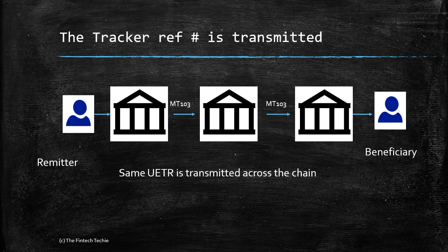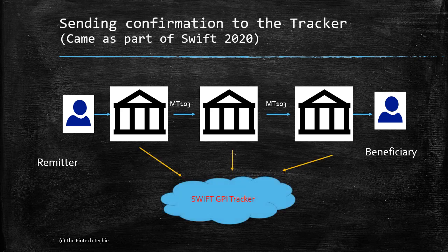The same UETR is present in the first message as well as the second message, helping identify the payment end-to-end. As we've seen in an earlier video, when a Swift message is received by an intermediary, it sends an MT199 to the Swift GPI tracker, and that MT199 also contains the UETR reference number.